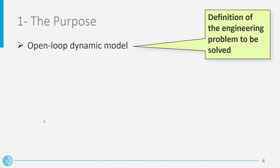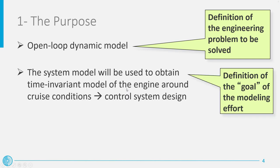By defining these attributes of the model — that is, dynamic and open-loop — we already started with the first step of the nine-step method, namely the definition of the purpose of the model. We can then continue defining better the application of the model, or in other words, what is the ultimate goal of the model. Taking inspiration from the last assignment of part A of the course, our open-loop model of the engine will be used to obtain, by linearization, a linear time-invariant model of the engine around the cruise operating conditions.